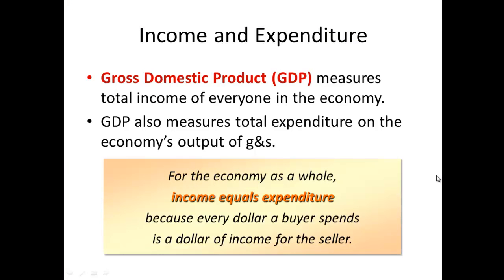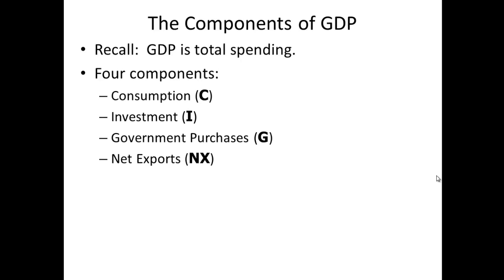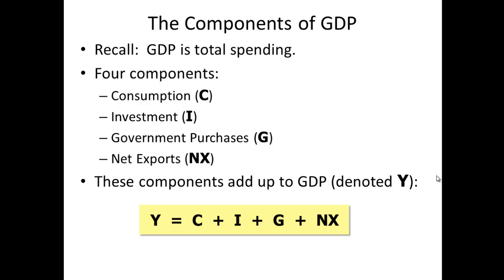GDP, or gross domestic product, is total income and total expenditures — they must equal. There are four components of GDP, and we will look at each one. The first is consumption, the second is investment, the third is government purchases, and the fourth is net exports. The formula is: Y, which denotes income or GDP, equals the sum of consumption, investment, government purchases, and net exports. In economics, when you see Y, think income.